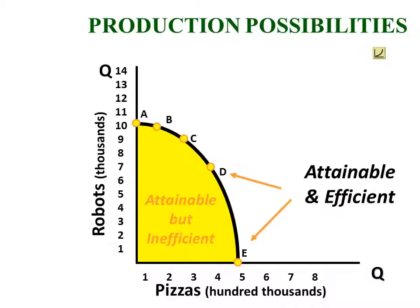For the time being, we have fixed resources in quantity and quality, fixed technology, and of course we're talking about a trade-off of two goods here — pizzas being consumer goods and robots being capital goods.